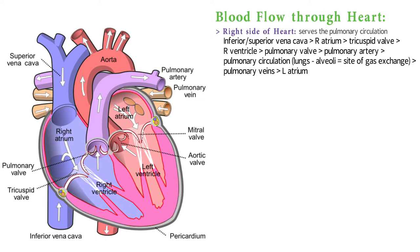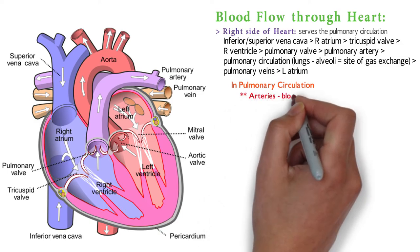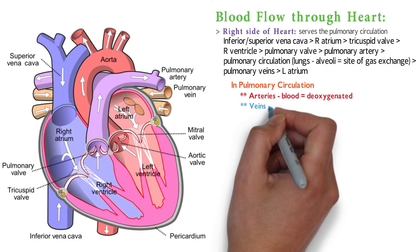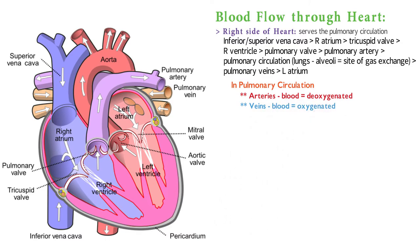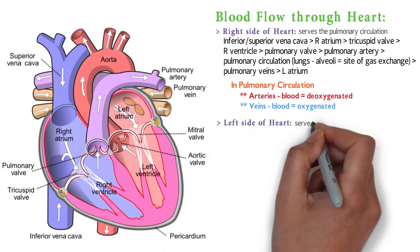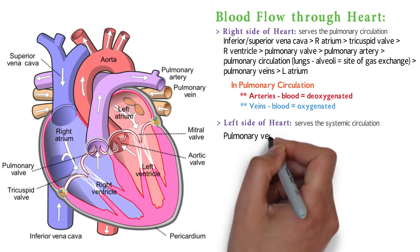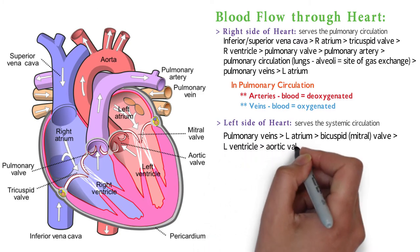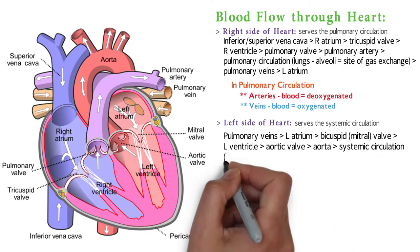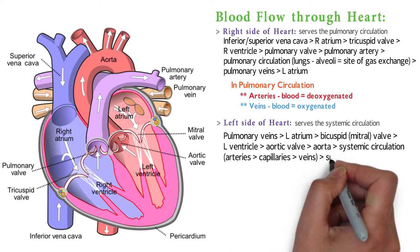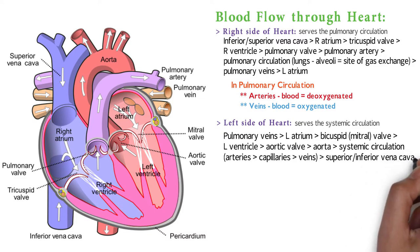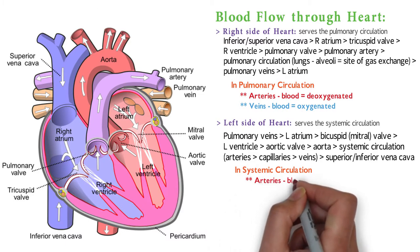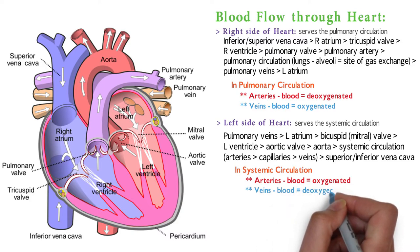This next part is very important. In pulmonary circulation, arteries will always carry deoxygenated blood, while veins will always carry oxygenated blood — and it is the opposite in systemic circulation. On the left side of the heart, which serves systemic circulation: the pulmonary veins bring blood into the left atrium, then blood travels through the bicuspid or mitral valve into the left ventricle, then through the aortic valve into the aorta. Blood then enters systemic circulation, traveling through arteries to the capillaries where gas exchange occurs, then to the veins, and ultimately returning to the heart through the superior and inferior vena cava. In systemic circulation, arteries carry oxygenated blood, while veins carry deoxygenated blood.